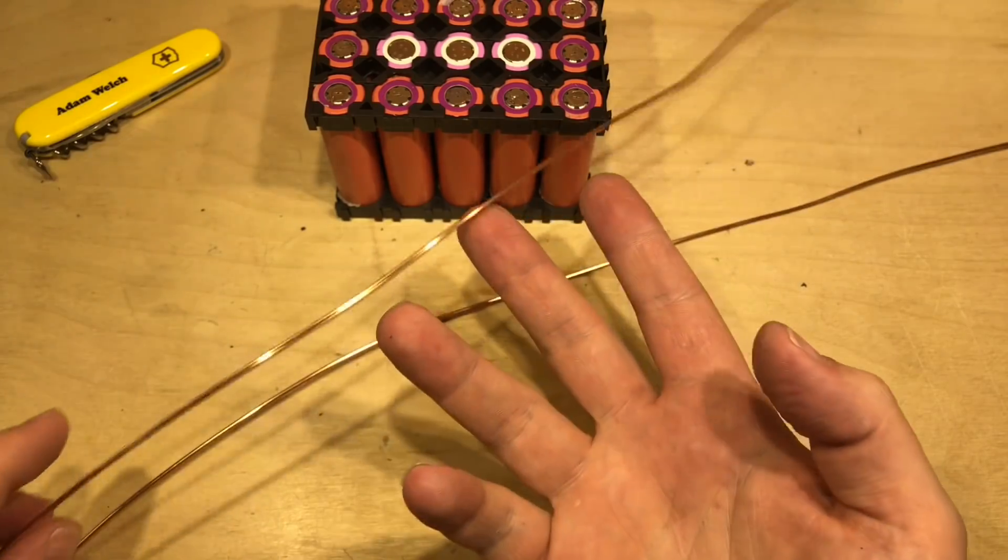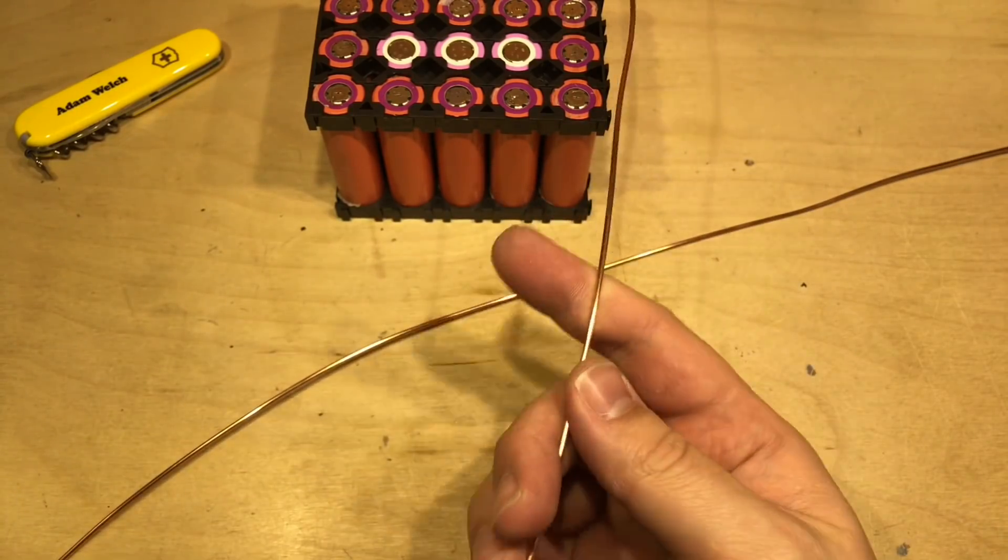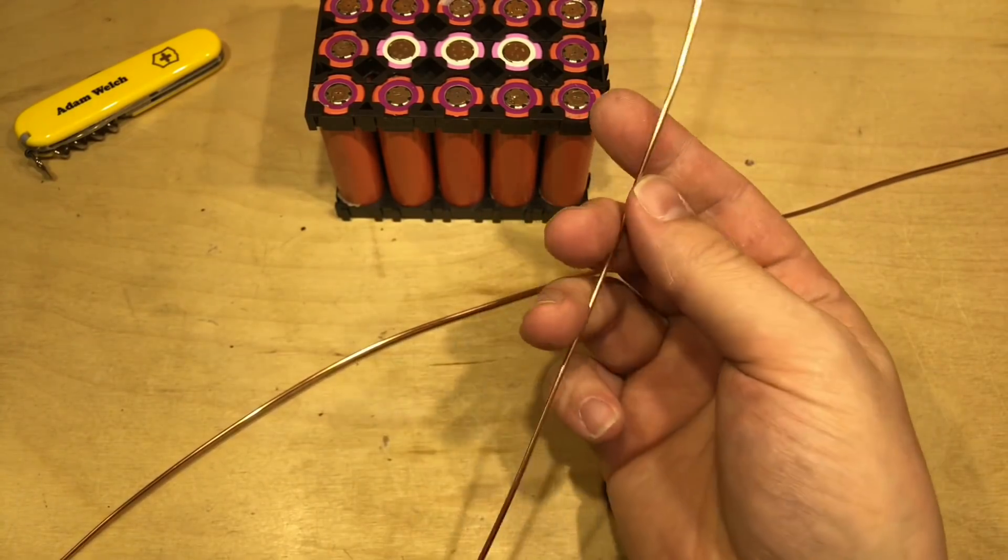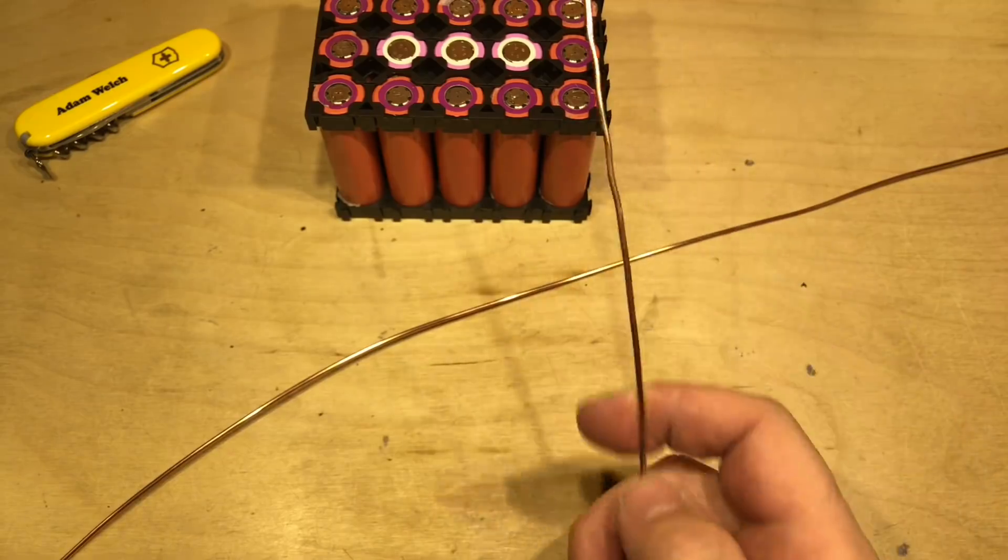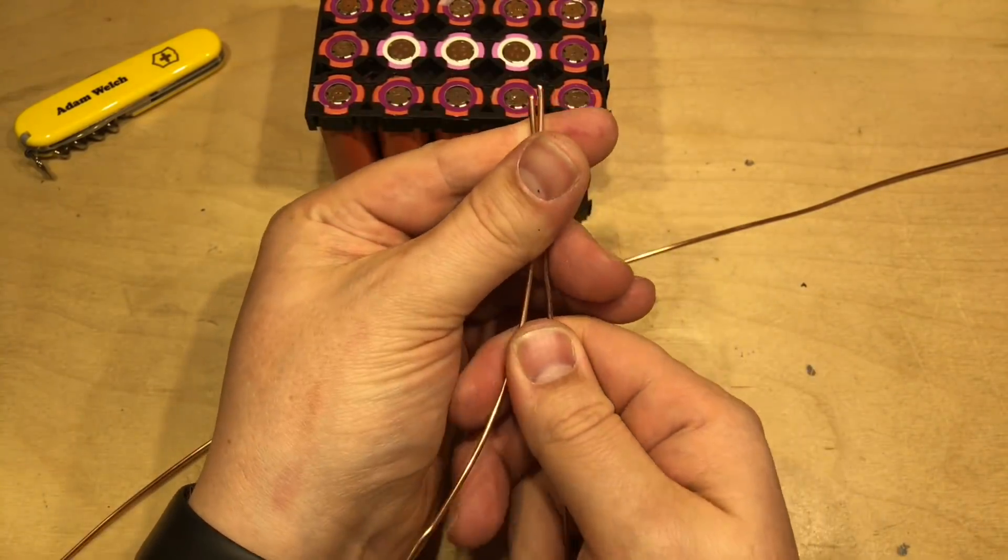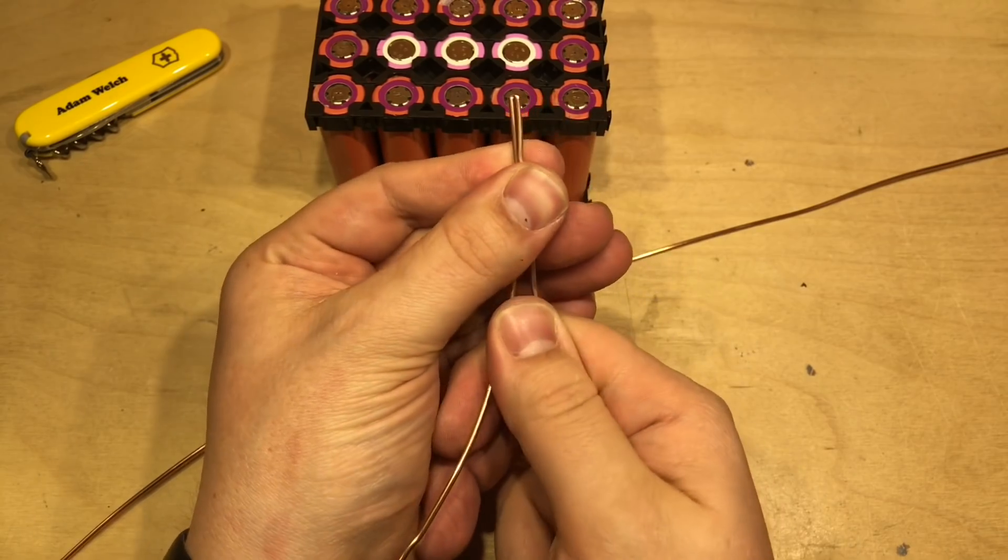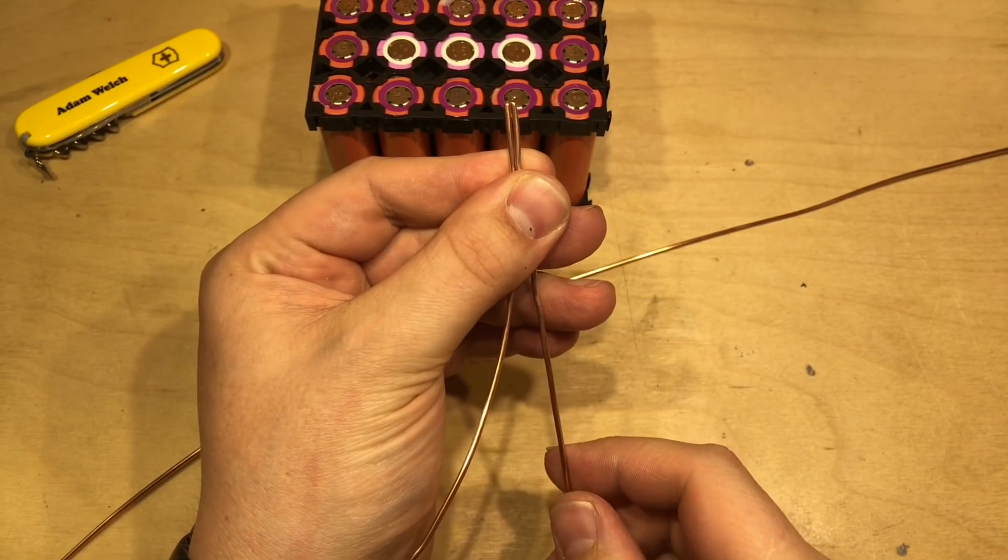So now I've got my copper here, I need to twist it because I'd prefer to have this doubled. I just need to get one end and the other together and then we just need to twist it together.